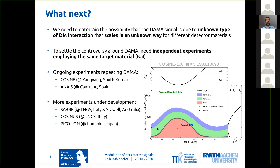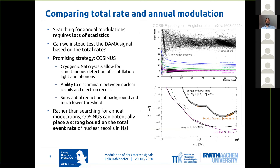There are more experiments under development — SABRE, COSINUS, and PICOLON — which all essentially plan to work with improved versions of the DAMA crystals. The problem, of course, is that whenever you search for annual modulations, you require lots of statistics, and DAMA has been accumulating statistics for many, many years. So it will take a while for any experiment to catch up with that.